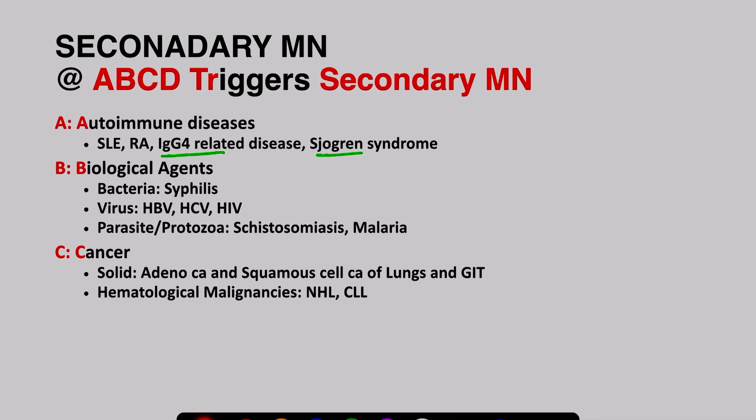C is for cancer. Membranous nephropathy can occur in both solid as well as hematological malignancies. Adenocarcinoma and common carcinomas usually cause membranous nephropathy, and it is more common in malignancies of the lungs, colon, and in some cases the breast and prostate. Among hematological malignancies, membranous nephropathy can be seen in non-Hodgkin's lymphoma and chronic lymphocytic leukemia.